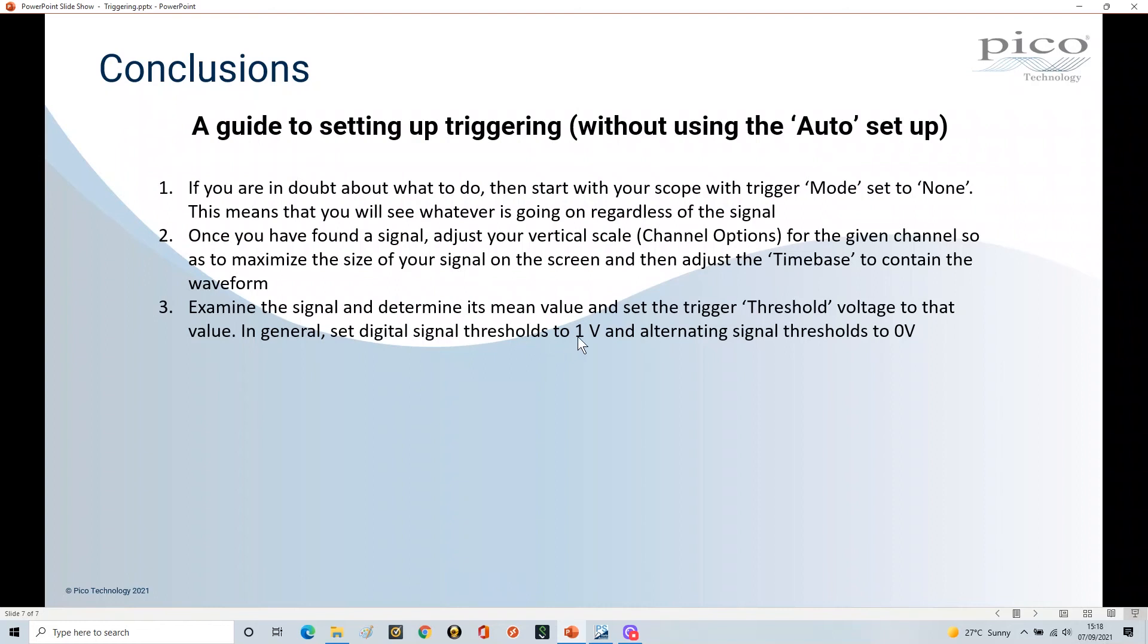In general, you can set digital signal thresholds to 1 volt from a digital system perspective - if it's for example even a 5 volt or a 3.3 volt system, one volt will work. That's possibly why PicoTech have actually defaulted the threshold to one volt, which makes sense. If you're on an alternating signal that's going around zero, then set the signal threshold to zero because it does make sense to do that.